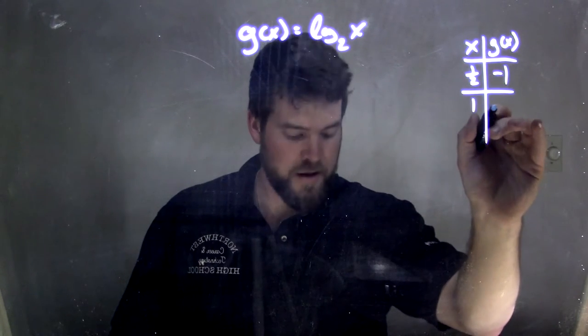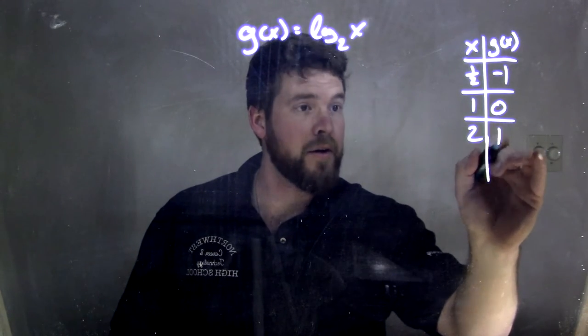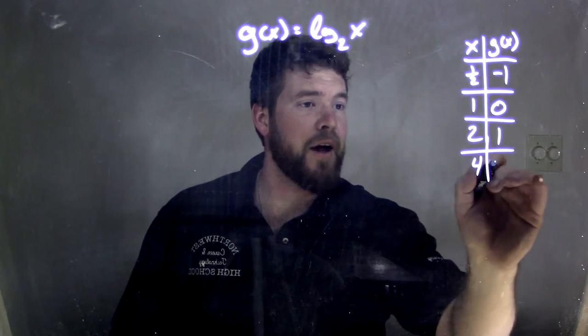If x is one, I know I have a zero. If x is two, I have a one. And if x is four, I have a two.